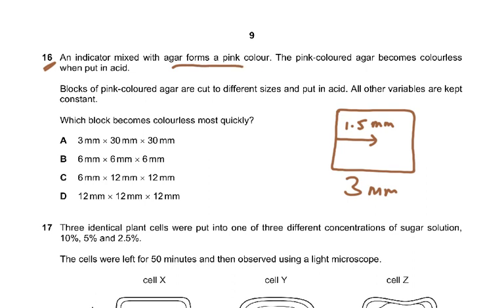Question 16: An indicator mixed with agar forms a pink color, and the pink colored agar becomes colorless when put in acid. Blocks of pink colored agar are cut to different sizes and placed in acid — all other variables kept constant. Which block becomes colorless most quickly? Block A was the smallest, so acid only had to diffuse 1.5 millimeters to reach the center, making it become colorless most quickly.